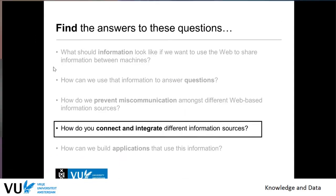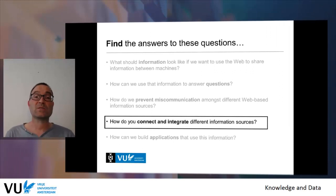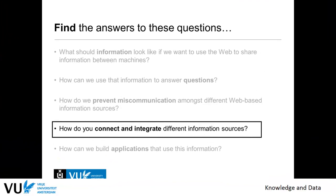We have addressed these key questions in the past: What should information look like if you want to use the web to share information between machines? The answer was: use knowledge graphs and RDF. How can we use that information to answer questions? The answer was: use SPARQL as a query language. How do we prevent miscommunication among different web-based information sources? The answer is semantics — using RDFS schemas to ensure properties have certain characteristics, and using OWL for even more expressive constraints on the vocabulary.